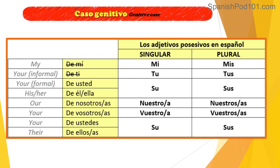To say 'our' in Spanish, you can say 'de nosotros' or 'de nosotras.' The possessive adjective for 'our' would be 'nuestro' or 'nuestra,' and the plural forms are 'nuestros' and 'nuestras.' For 'vosotros,' it's 'de vosotros,' 'de vosotras,' with possessive adjectives 'vuestro,' 'vuestra' singular and 'vuestros,' 'vuestras' plural. Remember, 'ustedes' means 'you all' in Latin America and 'vosotros' in Spain. For 'ustedes' and 'ellos/ellas,' the possessive adjective is 'su' and 'sus.'